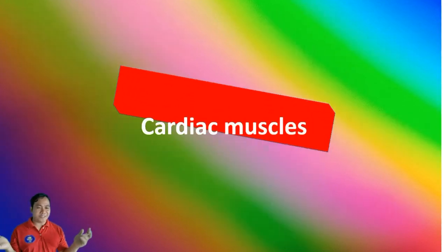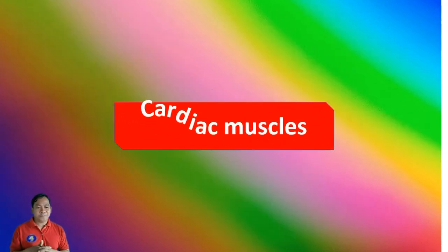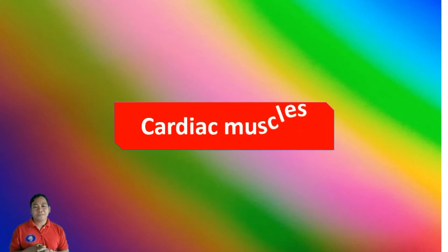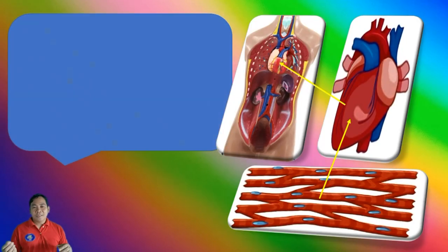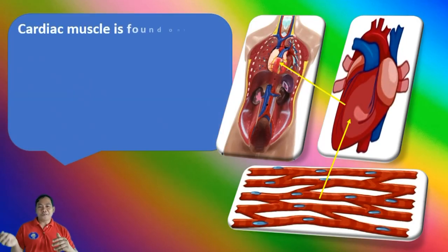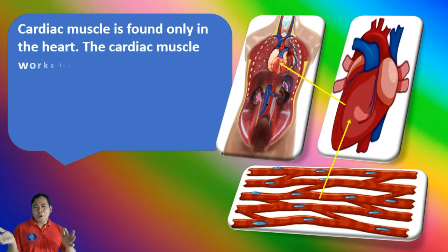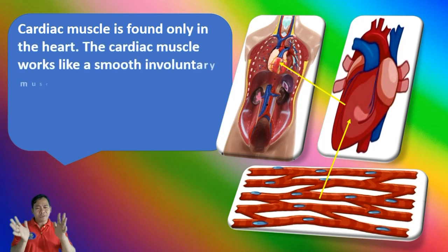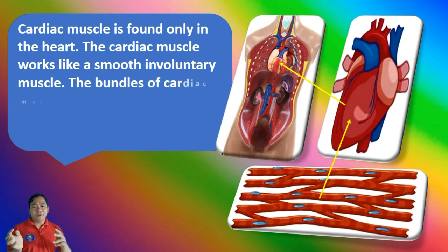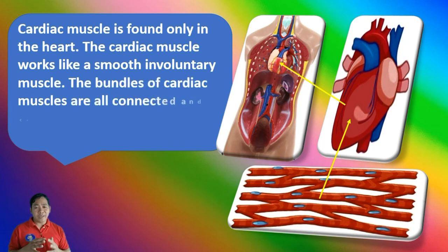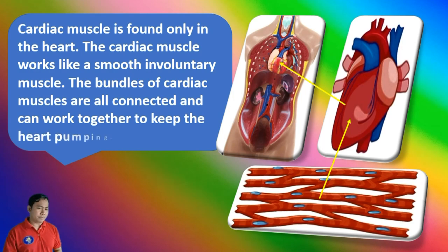Cardiac muscle is found only in the heart. Cardiac muscle works like both a smooth and involuntary muscle. The bundles of cardiac muscles are all connected and can work together to keep the heart pumping.